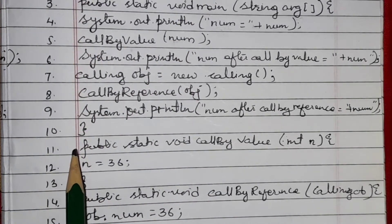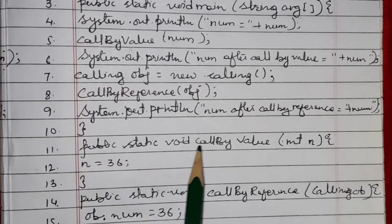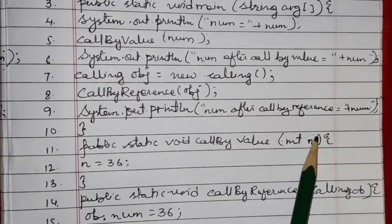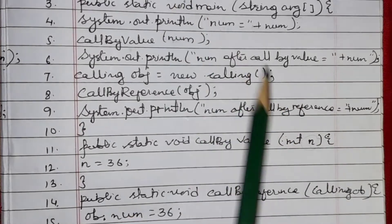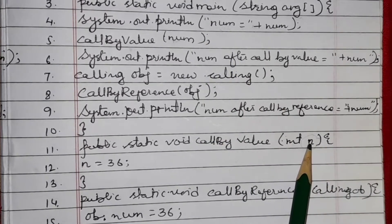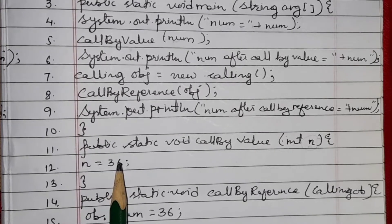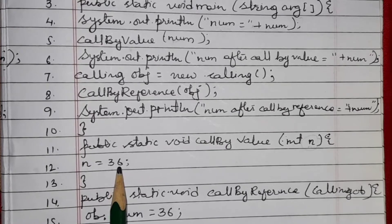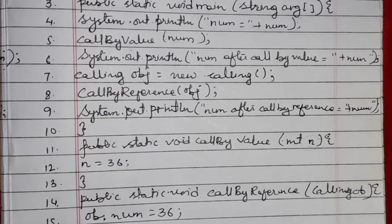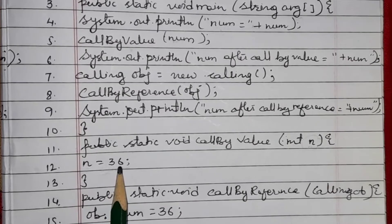As soon as we call with 'num', the program goes directly to line number 11: 'public static void callByValue(int n)'. The integer value of num is copied into 'n'. Then 'n = 36', so the copied value is changed to 36. In call by value, the value is changed, not the address.